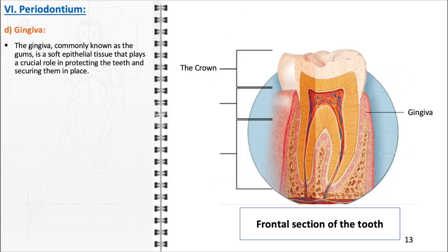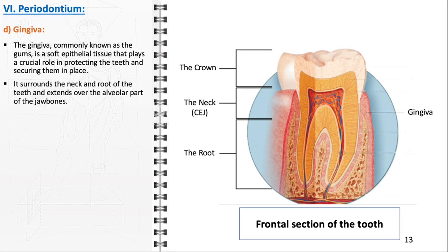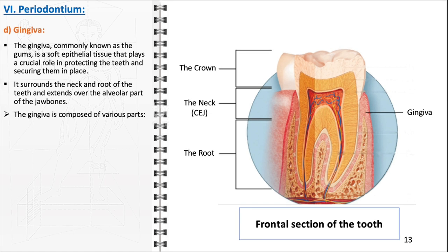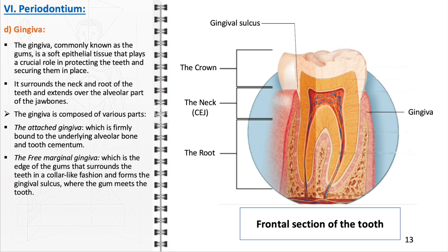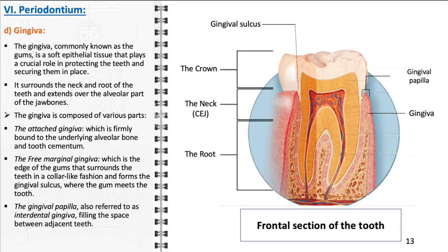The gingiva, a key element of the periodontium commonly known as the gums, is a soft epithelial tissue essential for oral health. It serves to protect the teeth and secure them within the jaw, enveloping the necks and roots of the teeth and extending over the alveolar jaw bones. The gingiva is composed of various parts: the attached gingiva, firmly bound to the underlying alveolar bone and tooth cementum; the free marginal gingiva, forming a collar-like structure around the teeth and creating the gingival sulcus; and the gingival papilla or interdental gingiva, which fills the gaps between adjacent teeth and prevents food particles and bacteria from becoming lodged there, thereby protecting against periodontal disease.